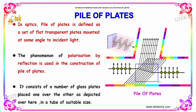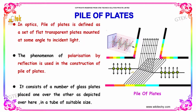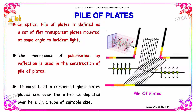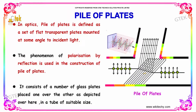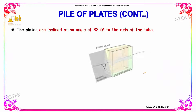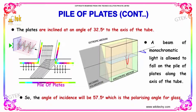The phenomenon of polarization by reflection is used in the construction of a pile of plates. It consists of a number of glass plates placed one over the other, as depicted here, of suitable size. The plates are inclined at an angle of 32.5 degrees to the axis of the tube.